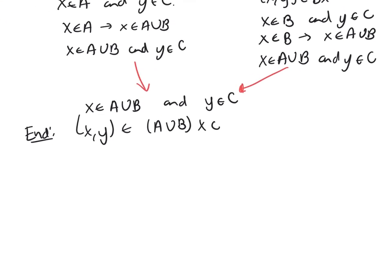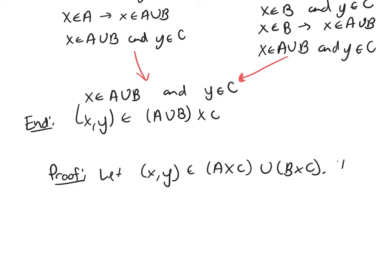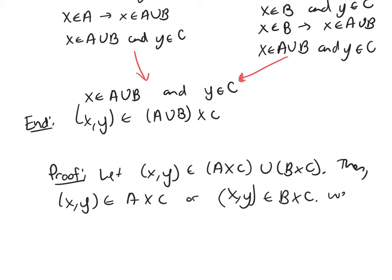Now I just need to write the formal proof. When you're doing this, reference back to your outline. So, I'm going to suppose (x, y) is in A cross C union B cross C. Then this element (x, y) is in A cross C, or this element is in B cross C. So we proceed with two cases.